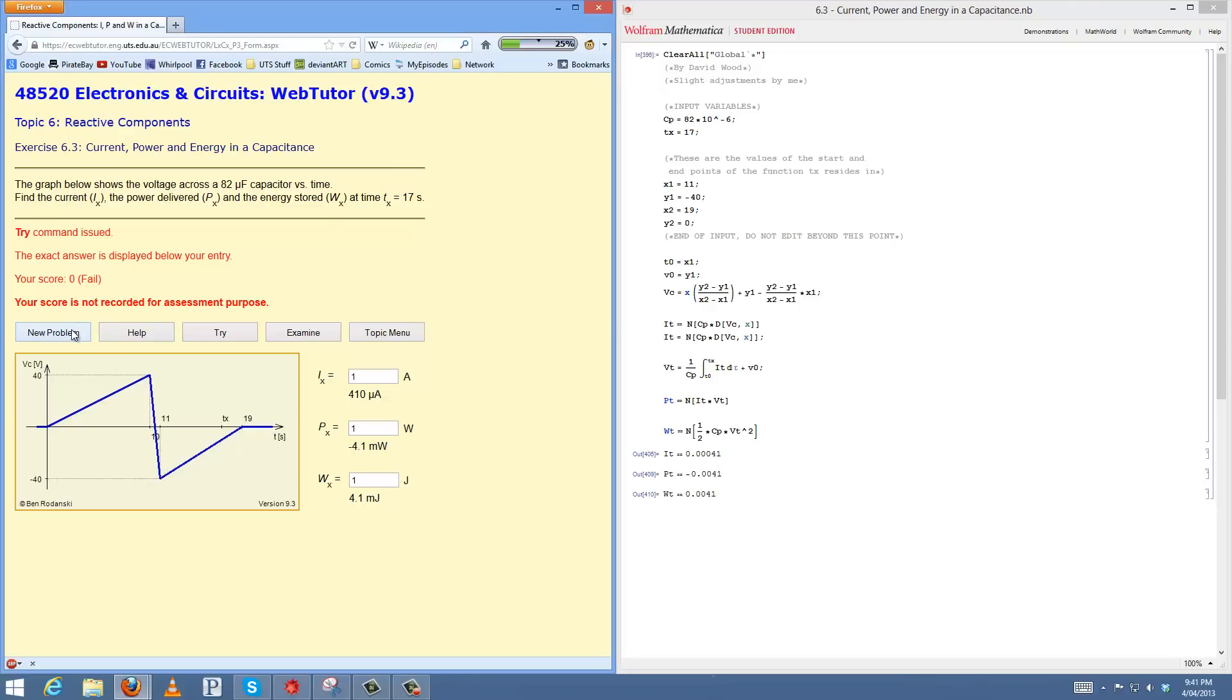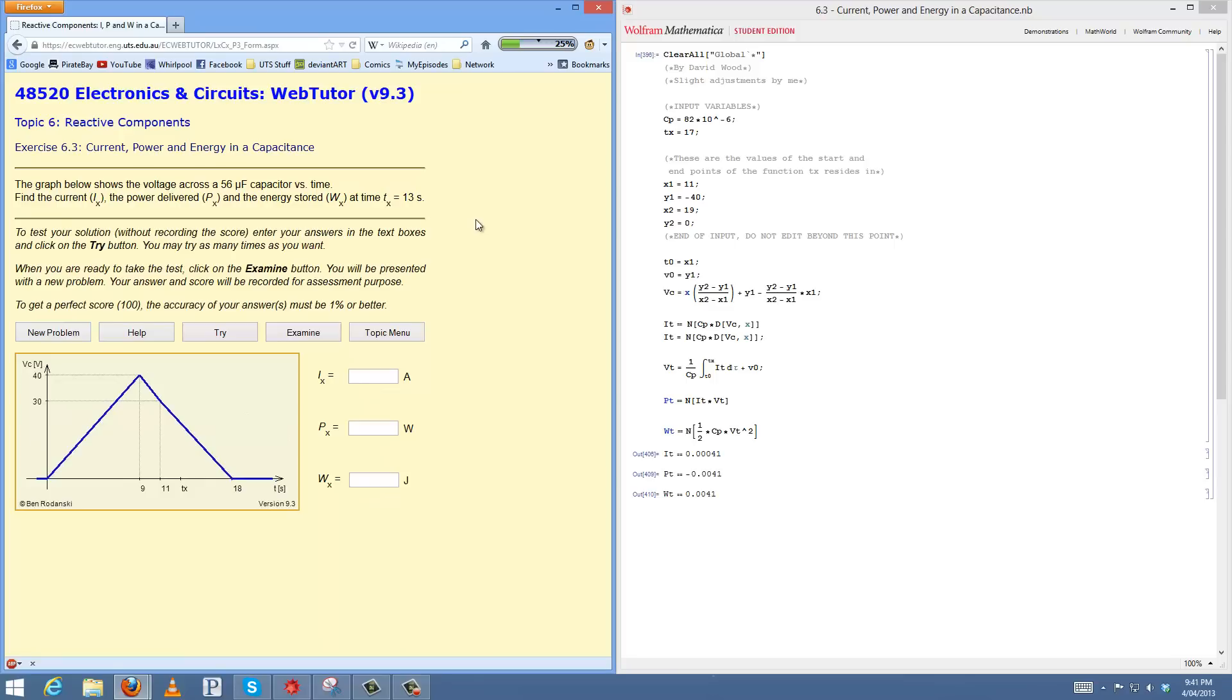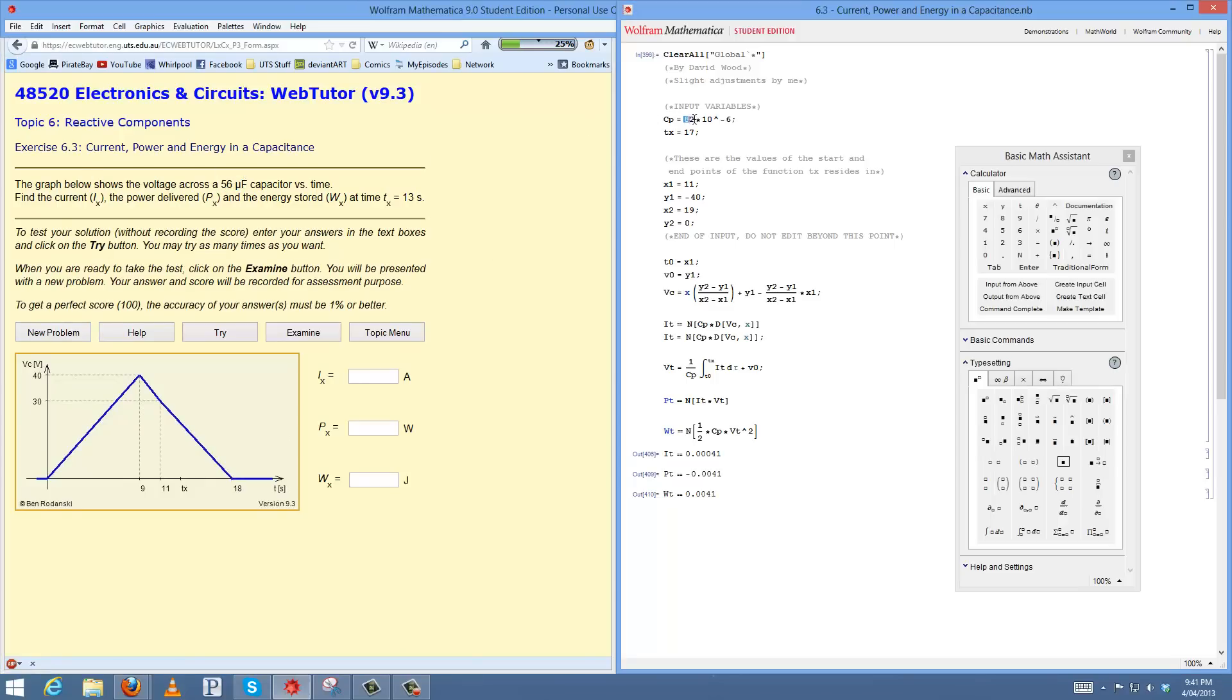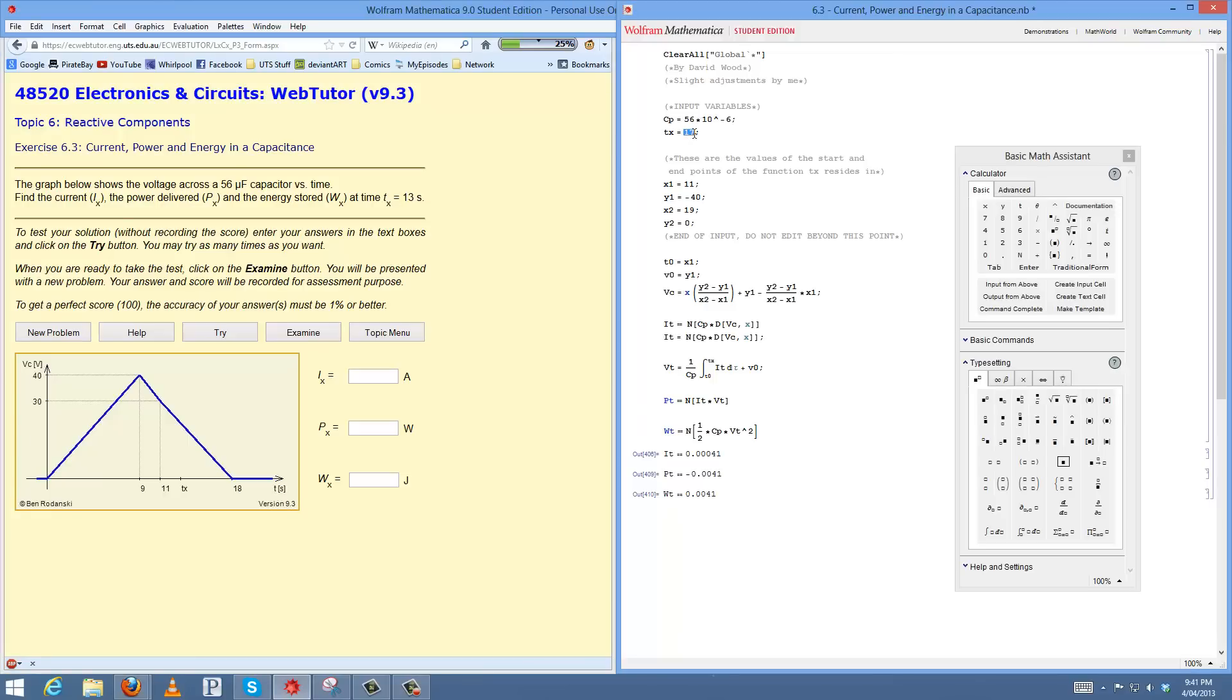Apart from that, now let's do an example. All right, so basically what you want to be looking at here, first of all, is your capacitance, 56 microfarads, and your t value, t is 13.